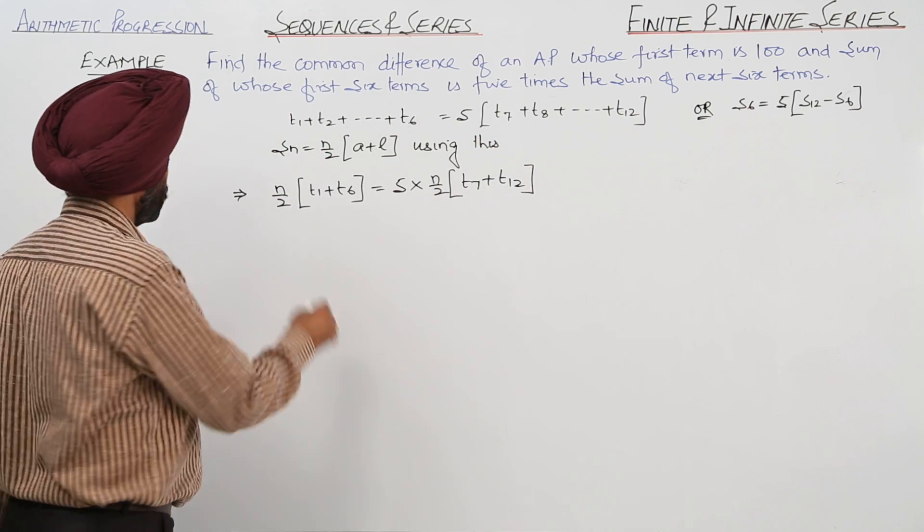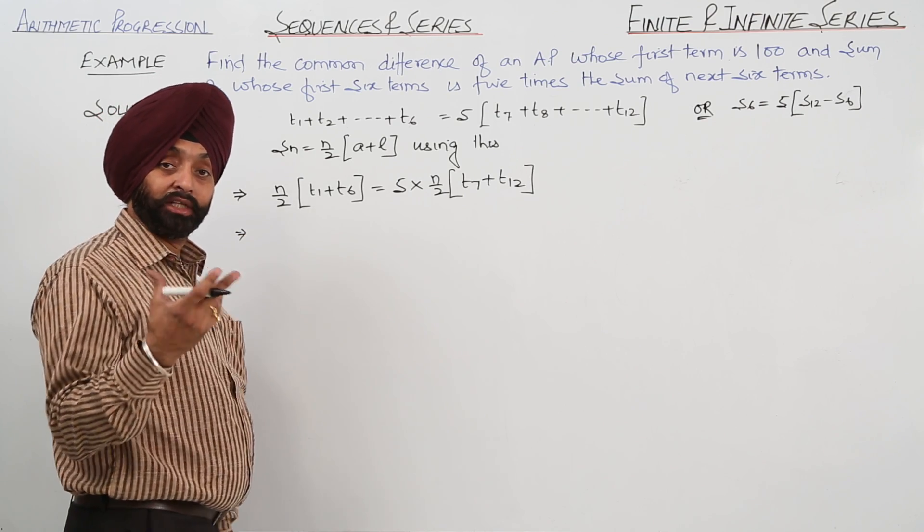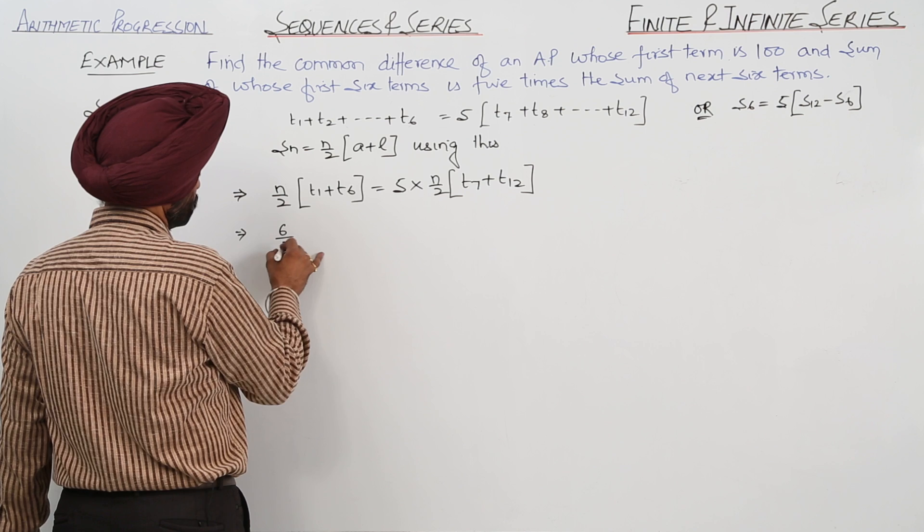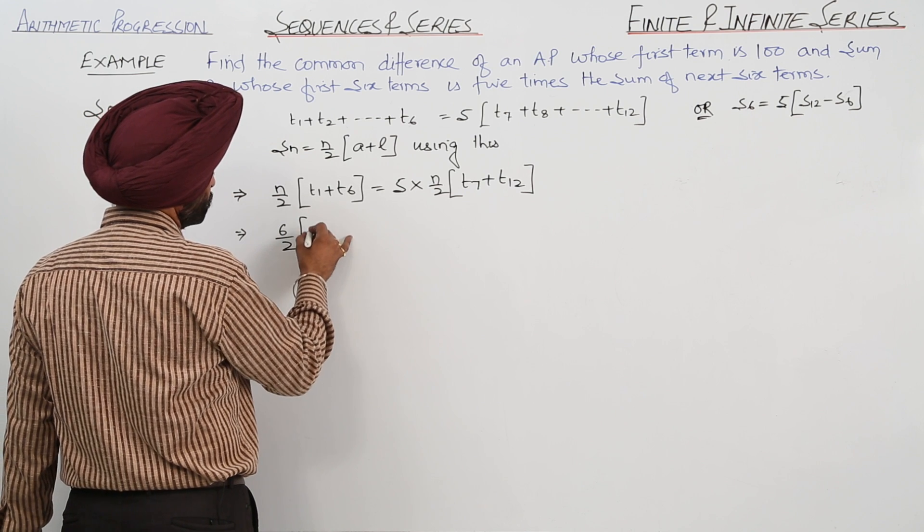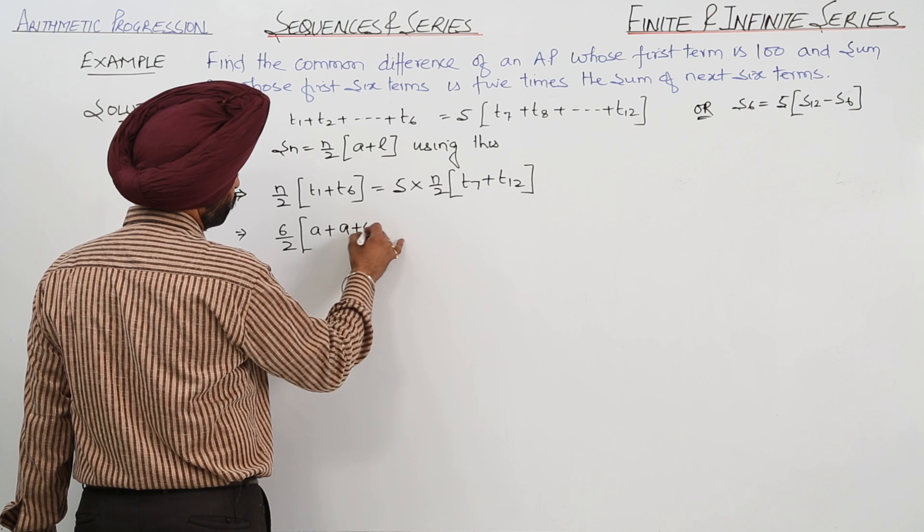Is it clear? Now here, what is N? How many terms? 6 terms. So, 6 upon 2, first term is A, 6th term A plus 5D.